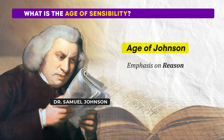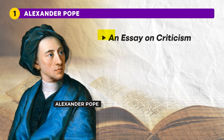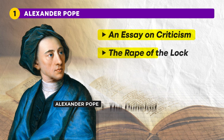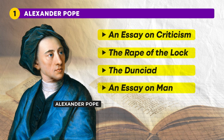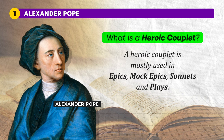Now let's quickly discuss some of the important poets of the Augustan Age and their works. The first poet is Alexander Pope, a poet and critic from England who lived from 1688 to 1744. He is known for poems like An Essay on Criticism, The Rape of the Lock, The Dunciad and An Essay on Man. His writing style includes the use of heroic couplets. A heroic couplet is mostly used in epics, mock epics, sonnets and plays.